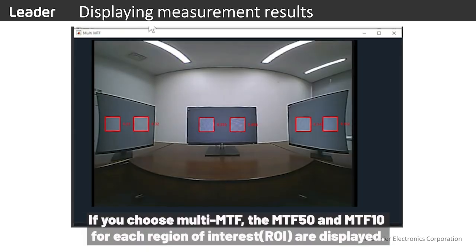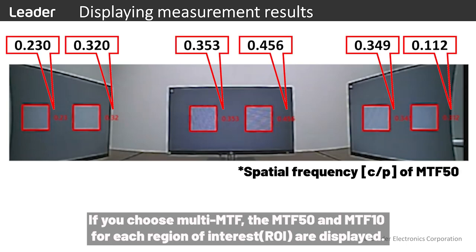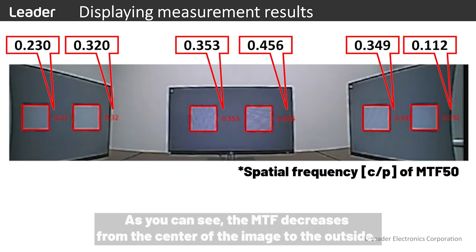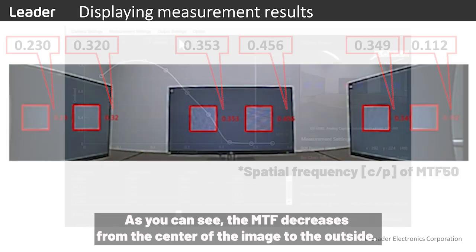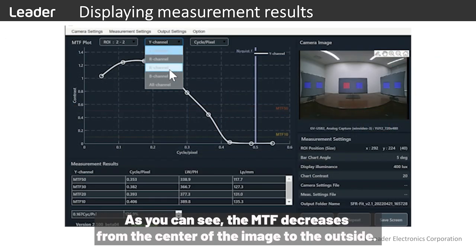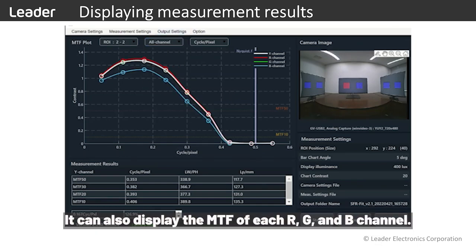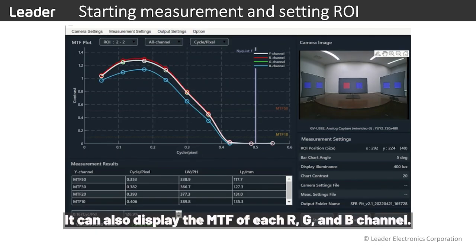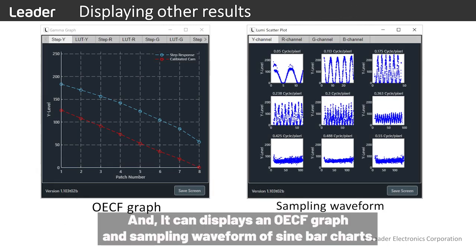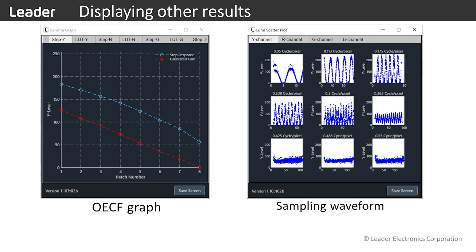If you choose multi MDF, the MDF 50 and MDF 10 for each region of interest are displayed. As you can see, the MDF decreases from the center of the image to the outside. It can also display the MDF of each R, G, and B channel, as well as an OECF graph and sampling waveform of sine bar charts.